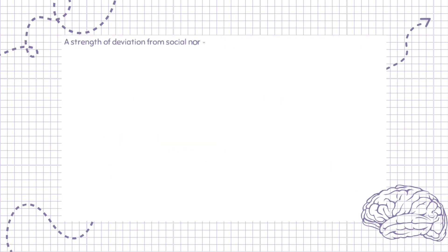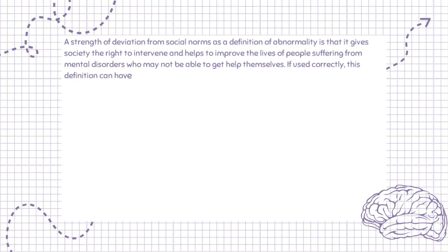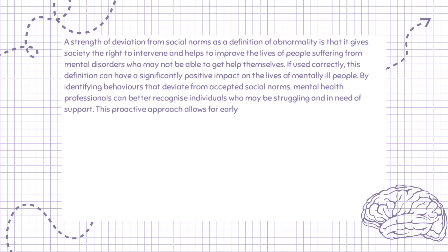A strength of deviation from social norms as a definition of abnormality is that it gives society the right to intervene and helps to improve the lives of people suffering from mental disorders who may not be able to get help themselves. By identifying behaviors that deviate from accepted social norms, mental health professionals can better recognize individuals who may be struggling and in need of support. This proactive approach allows for early intervention, which can lead to timely treatment and improved outcomes for those affected.